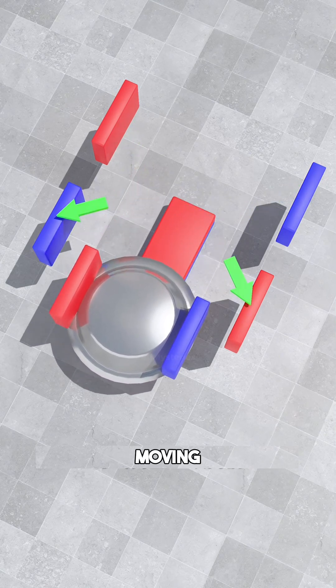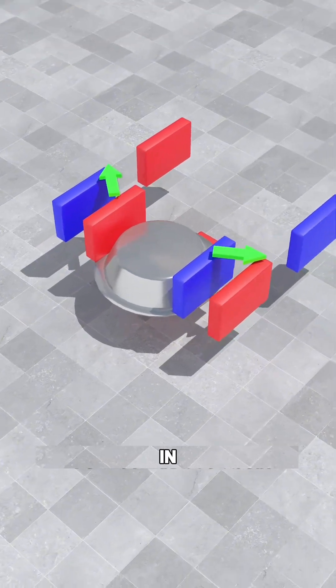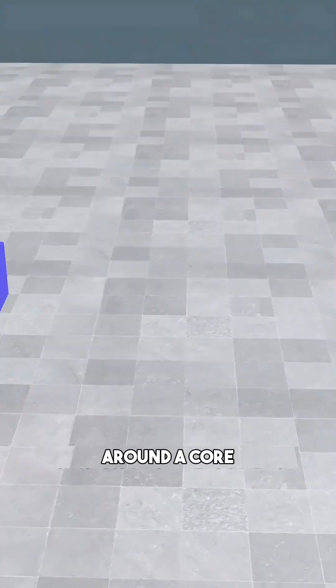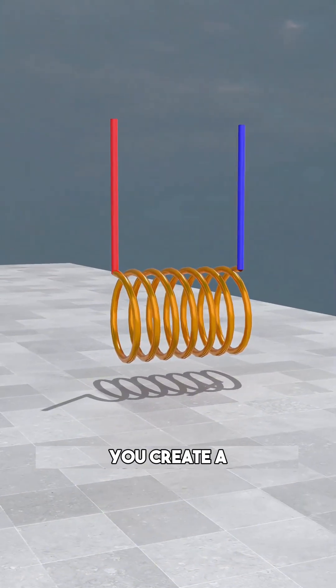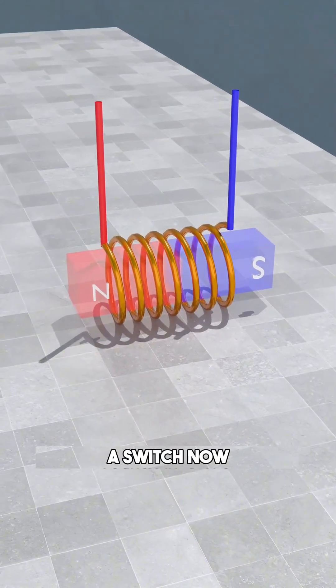To keep it moving, you need a way to flip the magnetic field instantly. This is where the electromagnet comes in. By coiling wire around a core and running a current through it, you create a magnet that can be turned on, off, or reversed just by flipping a switch.